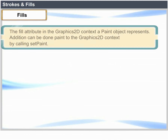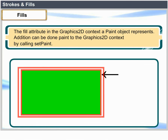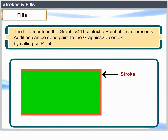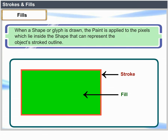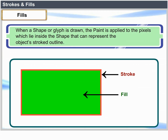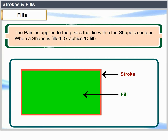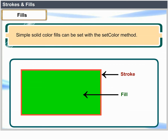Fills: The fill attribute in the Graphics2D context is a paint object. Paint can be added to the Graphics2D context by calling setPaint. When a shape or glyph is drawn, the paint is applied to the pixels which lie inside the shape, representing the object's stroke outline. When a shape is filled, simple solid color fills can be set with the setColor method.